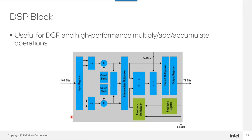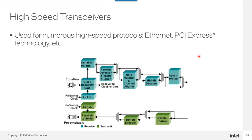DSP blocks perform high-performance multiplication operations and DSP functions, including multiply-accumulate operations, which can be expanded depending on your design. High-speed transceivers can be customized for many different protocols — including Ethernet and PCIe, among dozens of others — and configured in different ways across all devices.